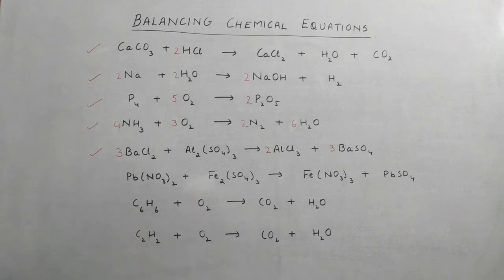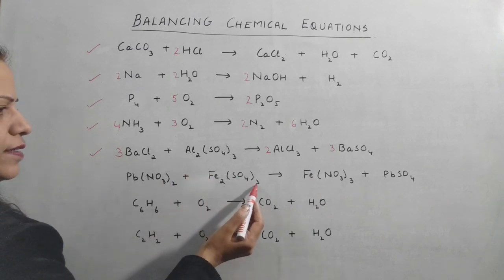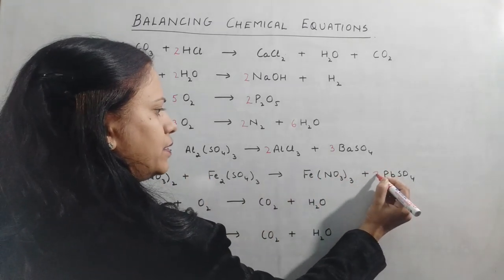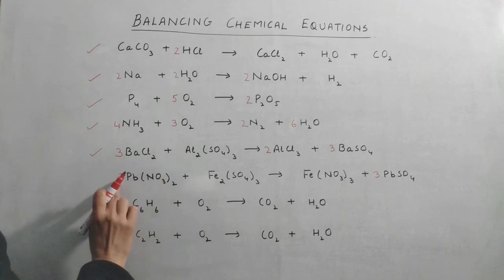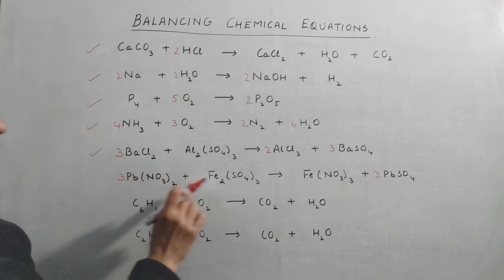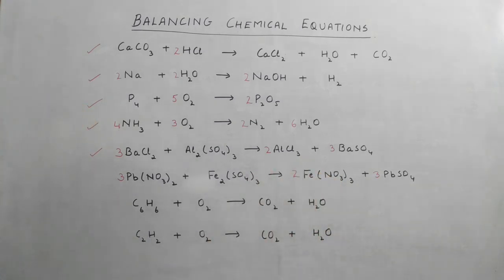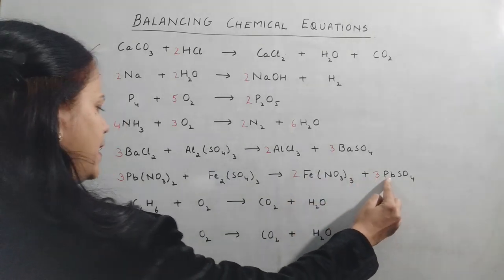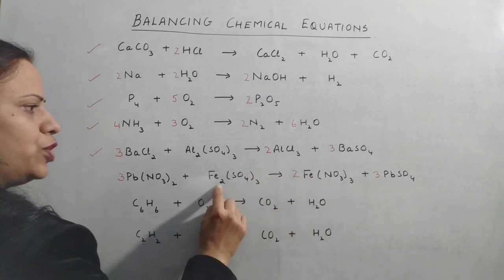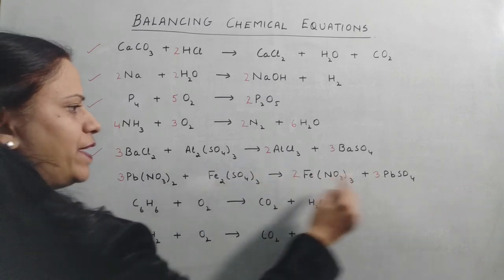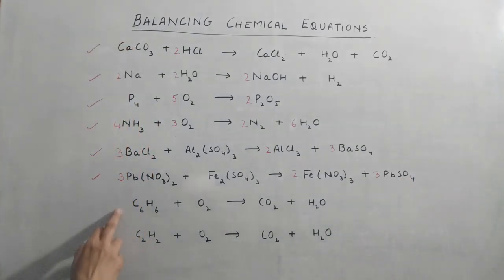The sixth equation involves lead, iron, nitrate, and sulfate — quite similar. Sulfate is three on one side so we write 3 in front. This makes lead three, so we add a coefficient of 3 on the lead side. Nitrate becomes six — three times two — so we write 2 in front of iron. Checking: three lead, six nitrate, two iron, three sulfate — the equation is balanced.